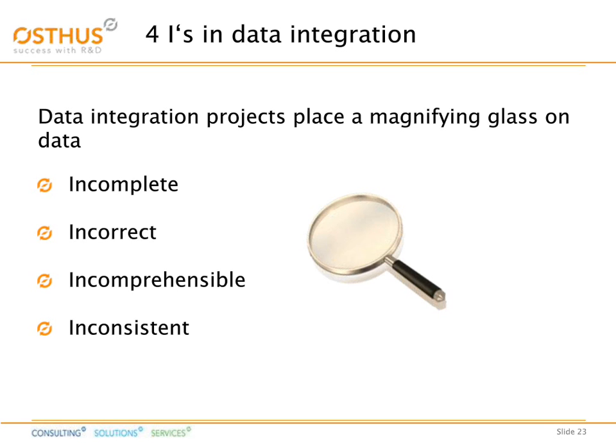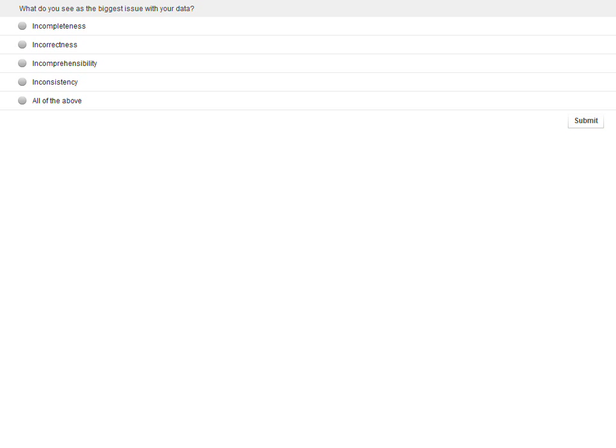Your third question for today is: what do you see as the biggest issue with your data? Your answers are A, incompleteness; B, incorrectness; C, incomprehensibility; D, inconsistency; or E, all of the above. Please submit your answers now.